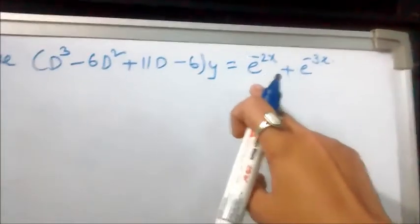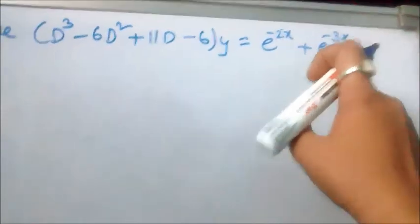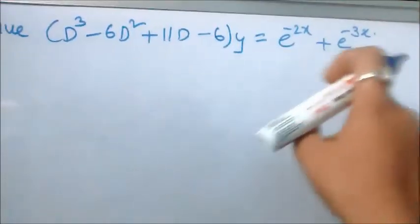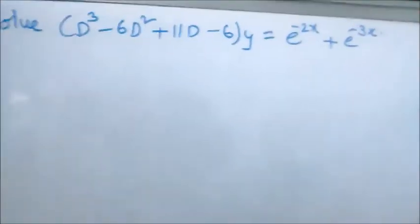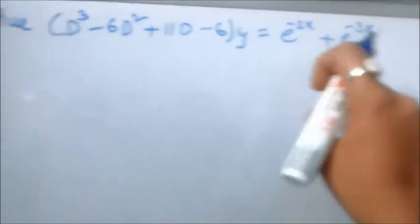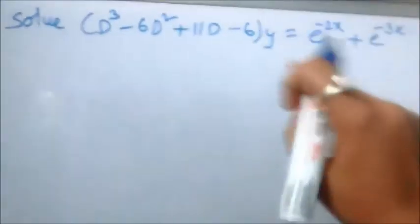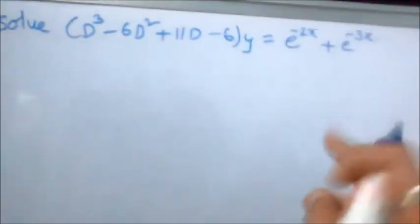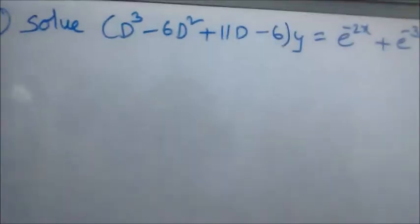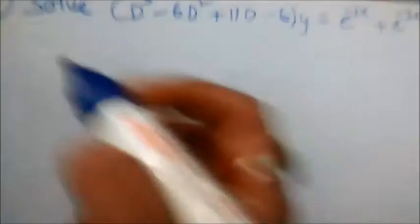By seeing this, we can identify which rule this problem falls under — first rule, second rule, third rule, or fourth rule. Since we have e^(-2x) + e^(-3x), this will go to the first rule. First, we will find the auxiliary equation for writing the complementary function.